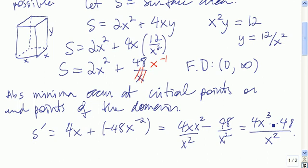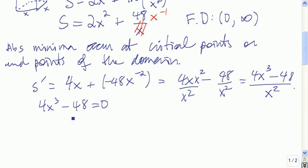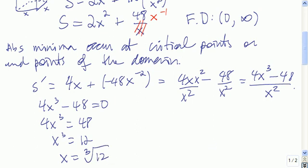So this is s prime. To find the critical points of s, we need to find where s prime is either 0 or undefined. s prime is undefined when x is 0, but 0 is not in the feasible domain, so we don't care about it. s prime is 0 if 4x cubed minus 48 is 0, so 4x cubed equals 48, or x cubed equals 12, or x is the cube root of 12. This is our only critical point, so this is where s achieves its absolute minimum.